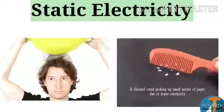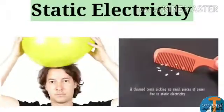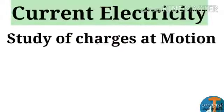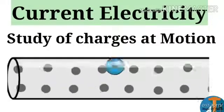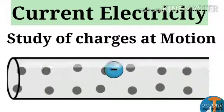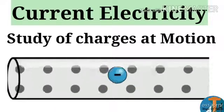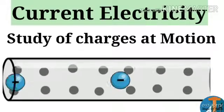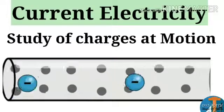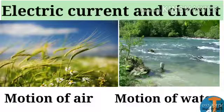This type of electricity we are calling static, and you're going to learn this in detail in your higher classes. Now we are focusing on current electricity. It is the study of charges in motion. Here we observe the charges are moving in a particular direction.